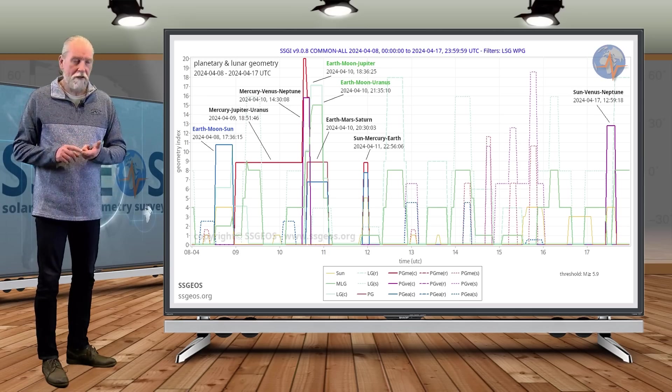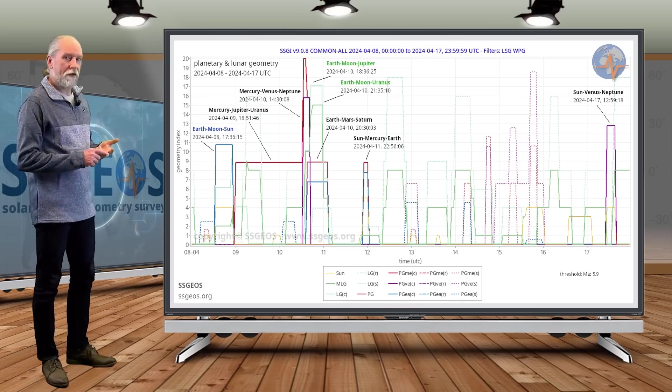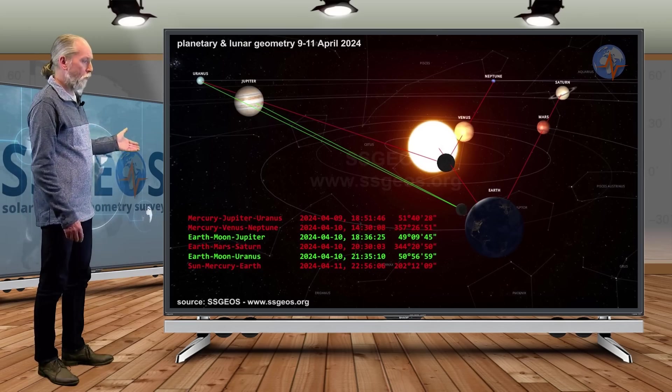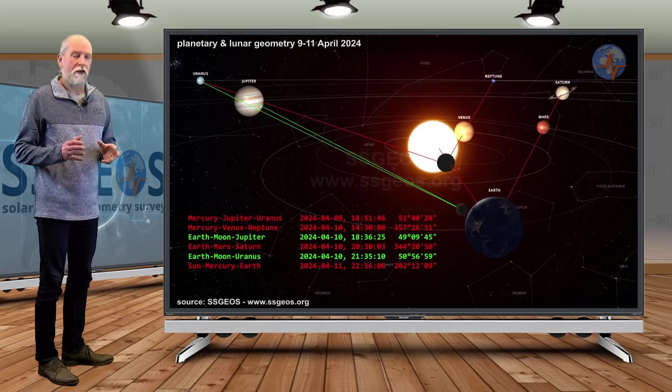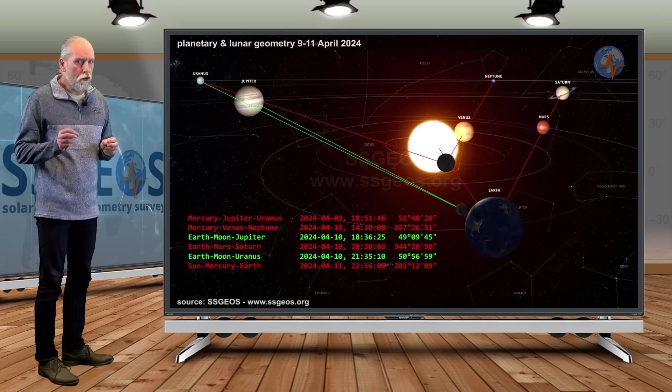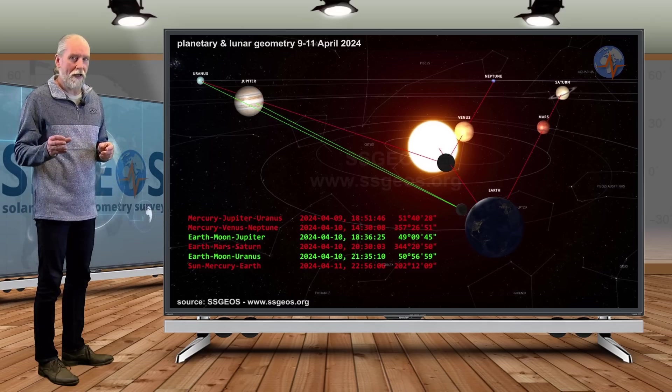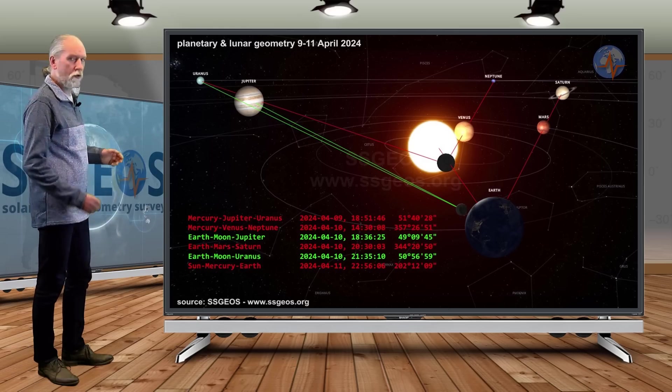We have Mercury involved. We have Venus involved. And even the Earth involved. If we look at the solar system, how that geometry actually looks like, we see here Earth and it will be in a conjunction with Mars and Saturn. That planetary conjunction usually triggers a higher 6 magnitude earthquake, around 6.6, 6.7 magnitude. And that is just this planetary conjunction. But we are going to have a lot more.